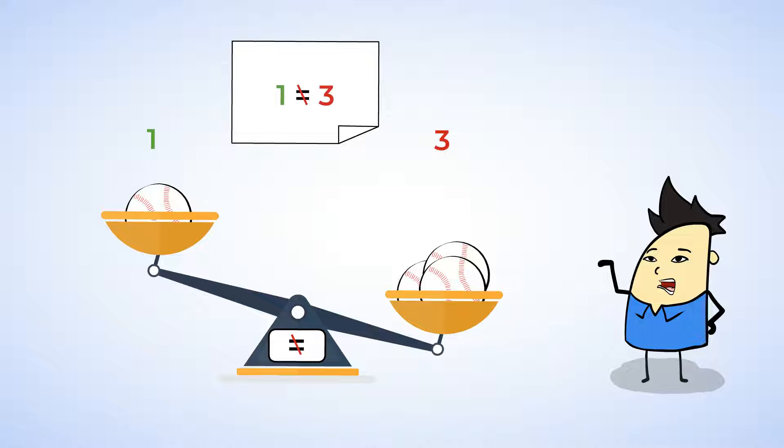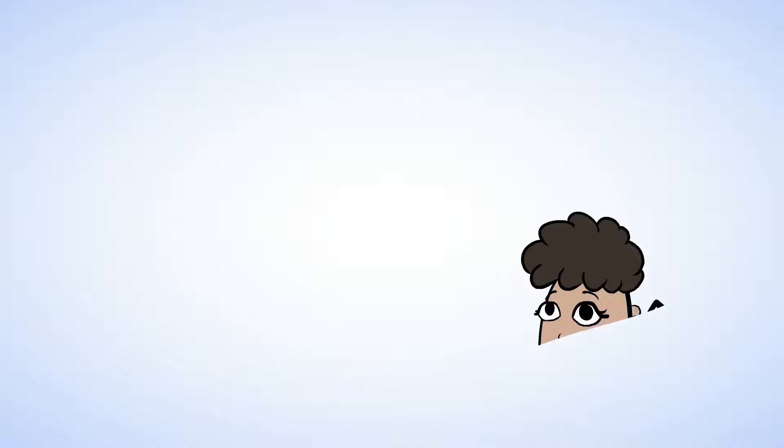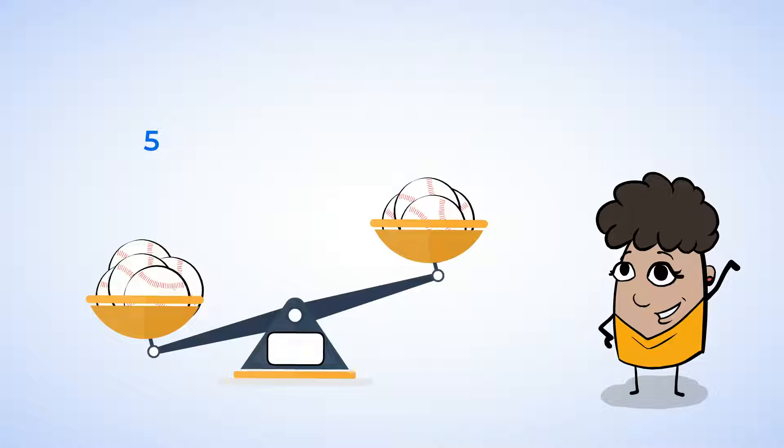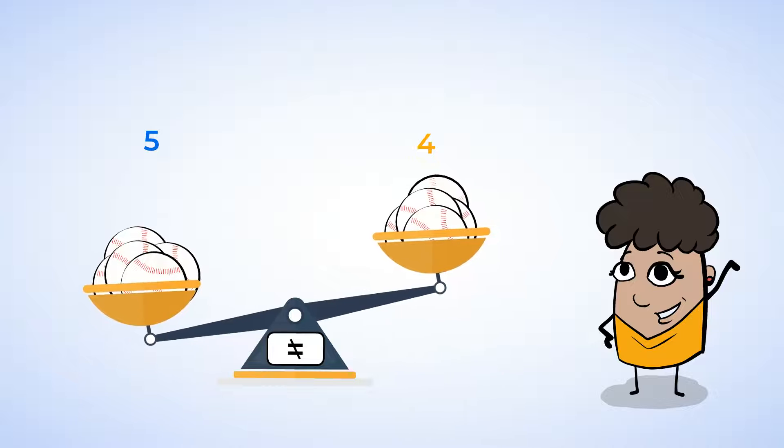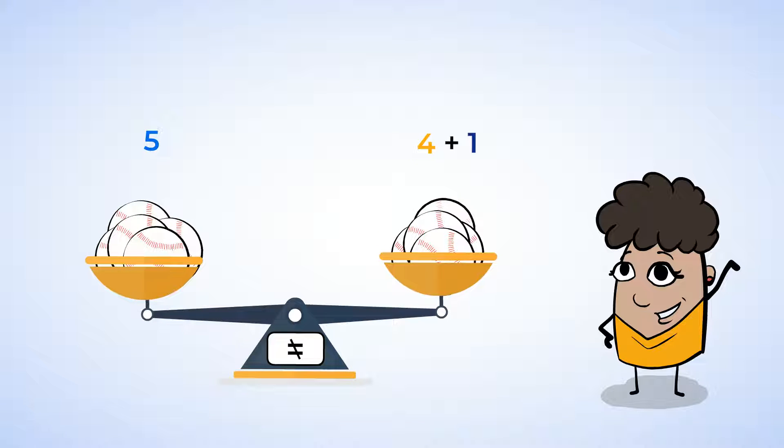Now let's try it with some other numbers. Let's put five on the left side, and four on the right. Now these numbers are not the same, so we cannot use the equal sign. They're not equal. But let's add one more baseball to the right side. And now we have four plus one. And now the scales are balanced again.